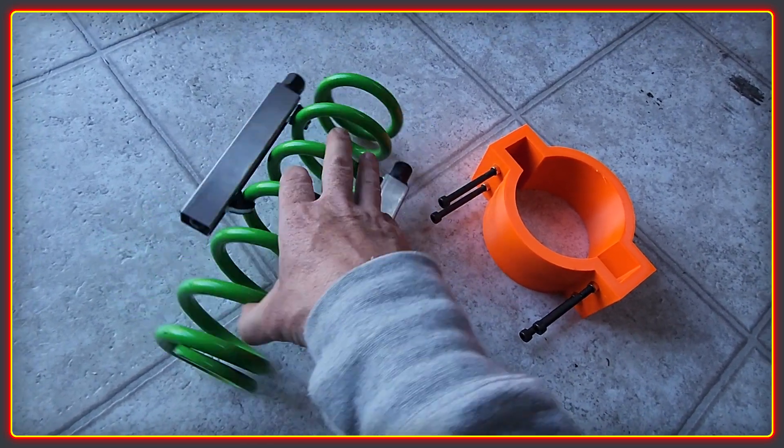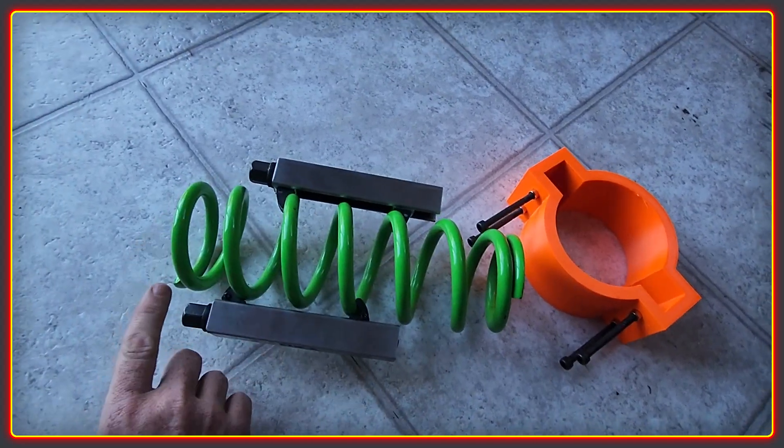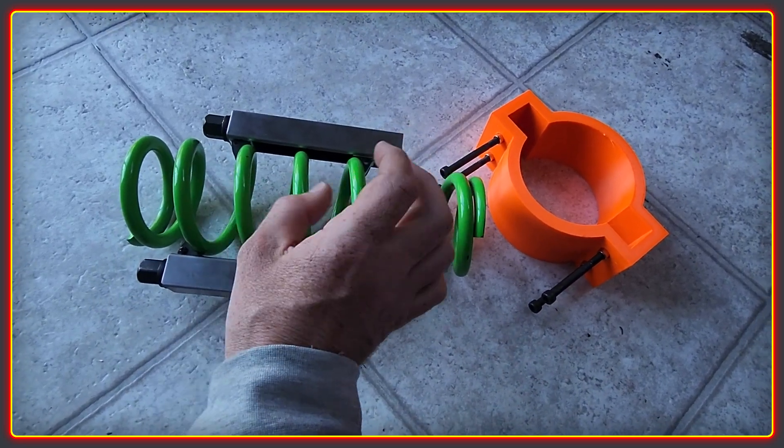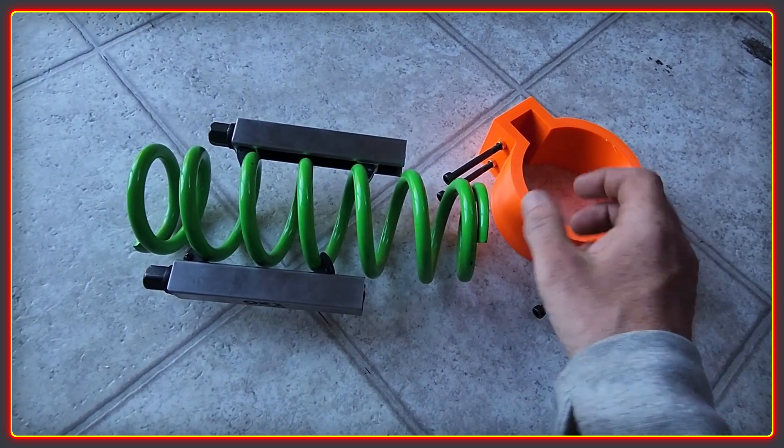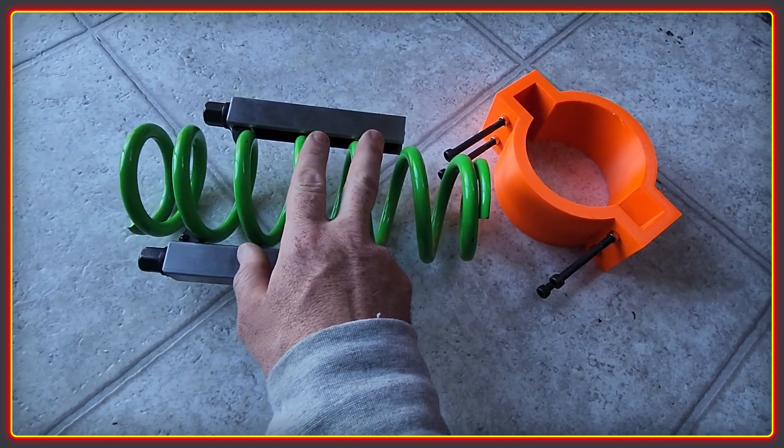They're very simple in operation. One of them goes on this side and one on the other side. Then you use the bolts here and you compress the spring. This allows you to then unbolt and remove the strut from inside of this.